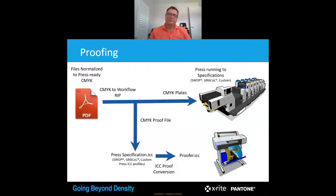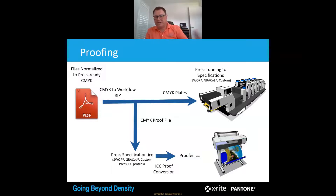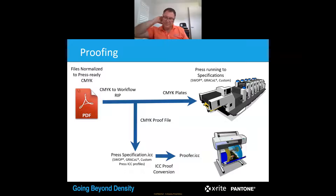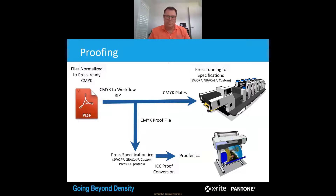The purpose of this section is to give you an understanding of the proofing process — what it is, how it can be used, and how it should be used. A press-ready CMYK PDF is produced through a workflow RIP; that can be sent to a CMYK proofer to be output as a press proof or press simulation, or sent to the plate maker to have plates created. The same file can be sent to the press for press setup and, depending on whether you're using closed-loop, it may preset from that PDF to run production.